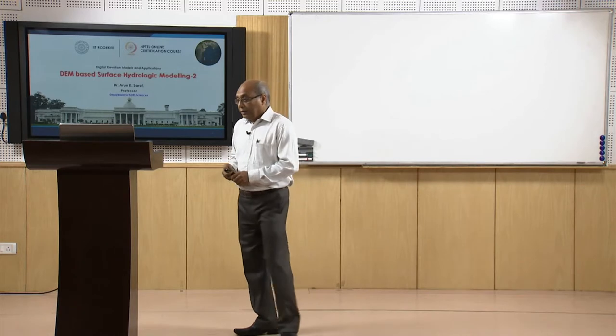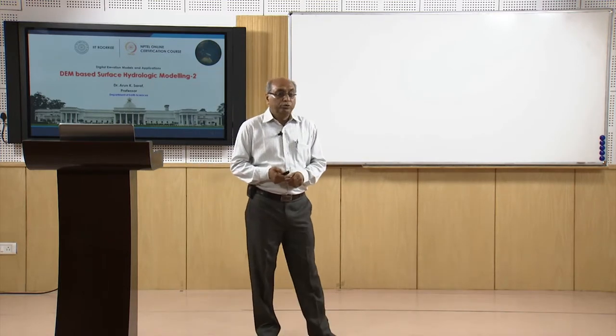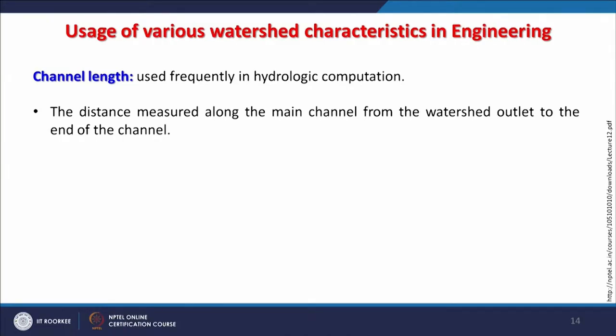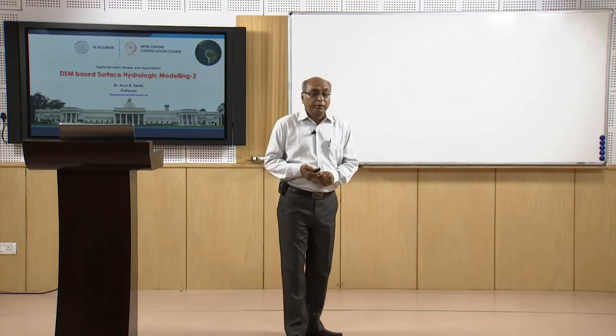Channel length also indicates various hydrologic characteristics of a watershed and is used for hydrologic computations; it is the distance measured along the main channel from the watershed outlet to the end of the channel near the watershed boundary. Channel slope is also important and can be determined as sc = Δec / lc, where Δec is the difference in elevation between the points defining the upper and lower ends of the channel and lc is the length of channel between the same two points.